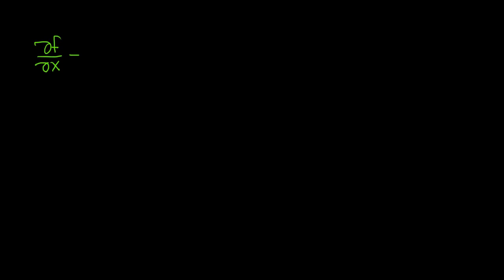In this video, we're going to look at the notion of a directional derivative. Recall that if we have a function of two variables, del f / del x is the partial derivative of f with respect to x. Intuitively, we can think of this as the slope in the x direction — it's the rate of change in the x direction.